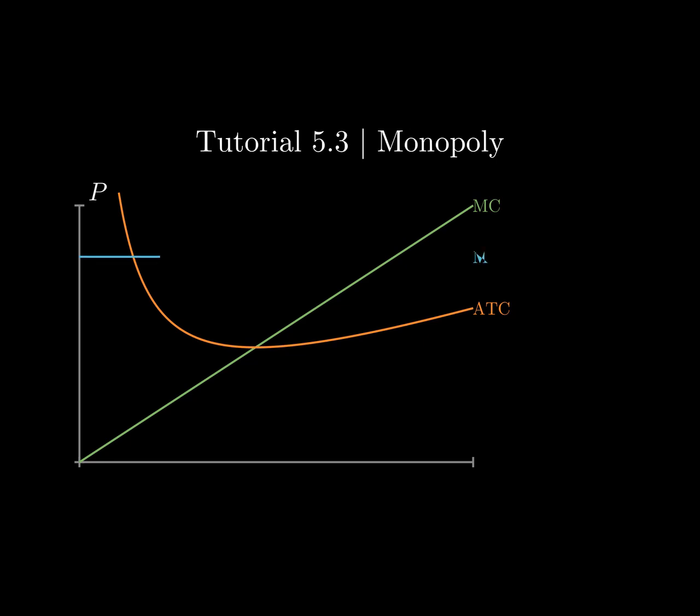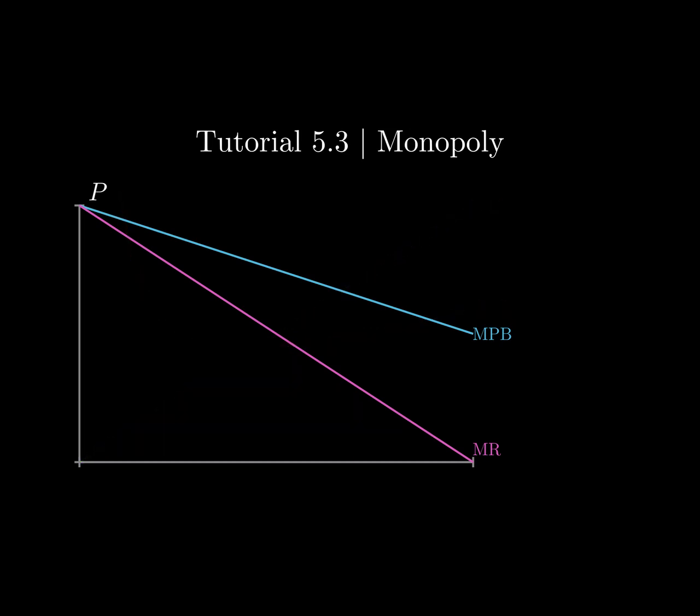Similar to perfectly competitive firms, monopolists also face a marginal private benefit curve and a marginal revenue curve. For the perfectly competitive firm, the marginal private benefit curve and the marginal revenue curve were the same, and they also equaled the price. For the monopolist though, the marginal private benefit curve and the marginal revenue curve are downward sloping. And remember the marginal private benefit curve is just another name for the demand curve.